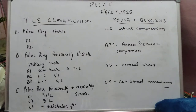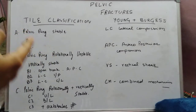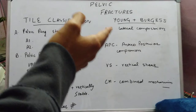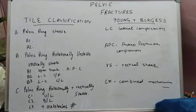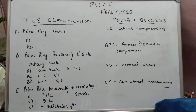In this video, we will study the various classification systems for pelvic fractures. As mentioned, we have two classification systems: the Tile classification and the Young and Burgess classification. The Young and Burgess classification is more commonly used. The fundamental basis of this classification system is that it is based upon the stability of the pelvis and, more importantly, the mechanism of injury to the pelvis.